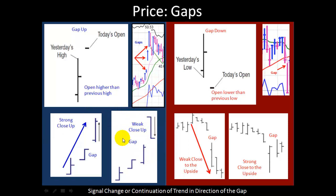When you have a gap up but a weak close, it's not as convincing and you'll want to keep a close eye on the stock. Conversely, a gap down will open lower than the previous day's low. Here's yesterday — there's the low, and it gaps down. Here's what it might look like on a chart. When you have a gap down and you have a weak close — meaning it closes near the bottom 25% of the day's range — that's a strong sign of distribution.